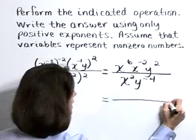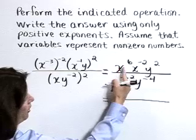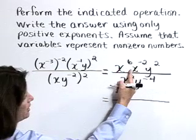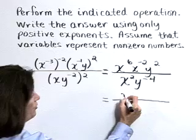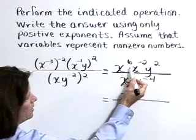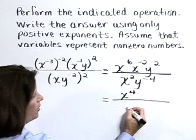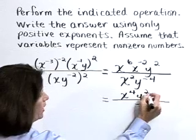Continuing to simplify in the numerator using our product rule. When we multiply like bases, these x's will add those exponents. So in the numerator, we've got x to the 6 plus a negative 2 is the fourth power times y squared.